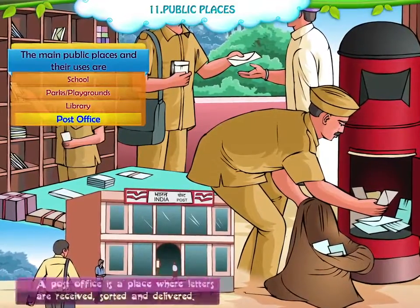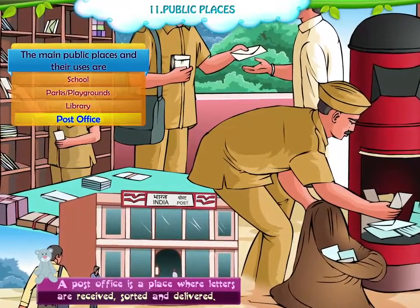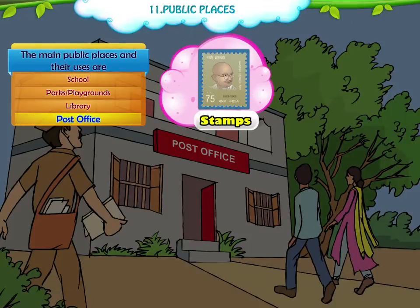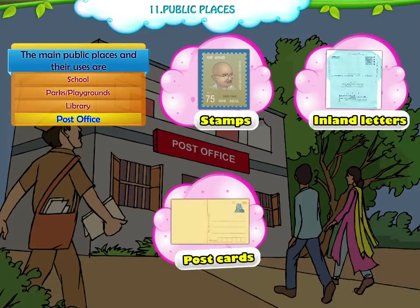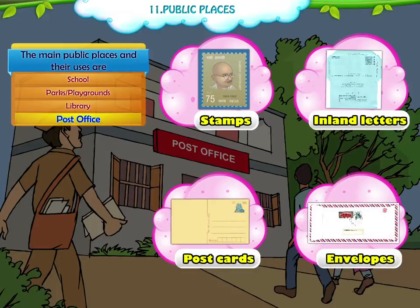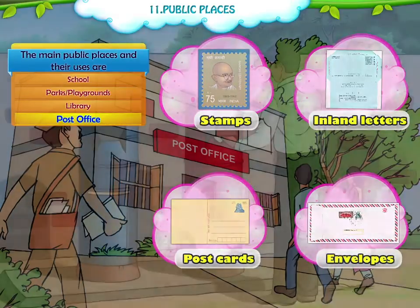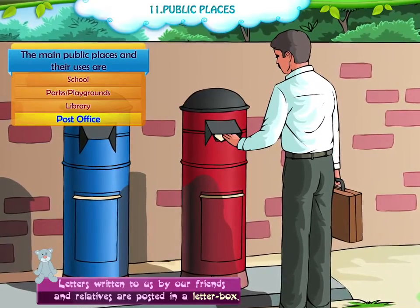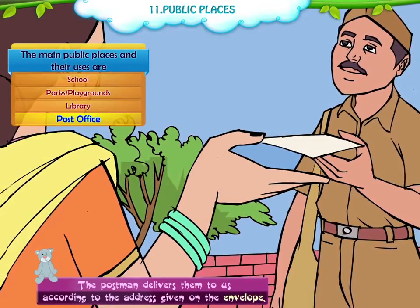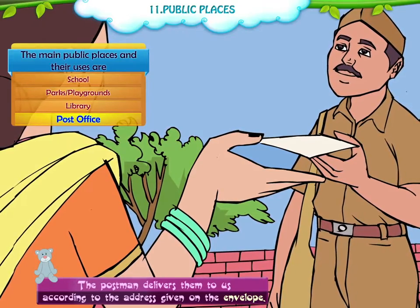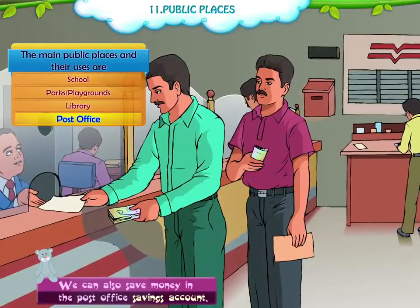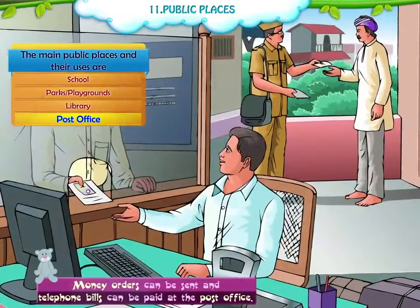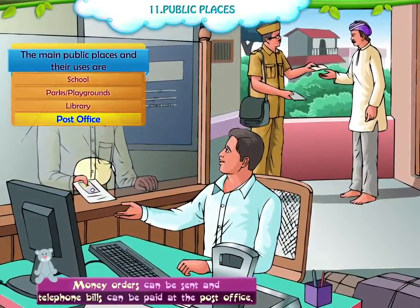Post Office. A post office is a place where letters are received, sorted and delivered. We can also buy stamps, inland letters, postcards and envelopes from the post office. Letters written to us by our friends and relatives are posted in a letter box, and the postman delivers them to us according to the address on the envelope. We can also save money in the post office savings account, send money orders and pay telephone bills at the post office.